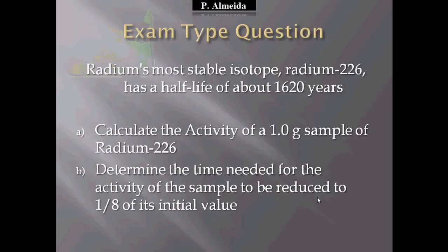Just to show you, here is an exam-type question: Radium's most stable isotope, radium-226, has a half-life of about 1,620 years. Calculate the activity of a 1-gram sample of radium-226. Then, determine the time needed for the activity of the sample to be reduced to 1/8 of its initial value. If you want to try it first, please pause the video — I'm going to show the answers now.